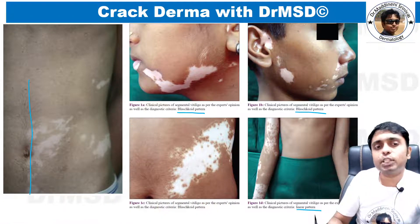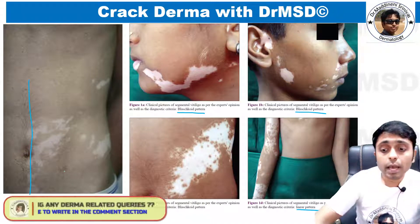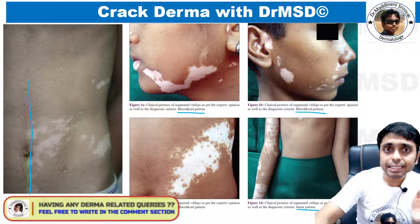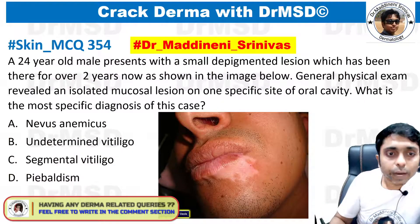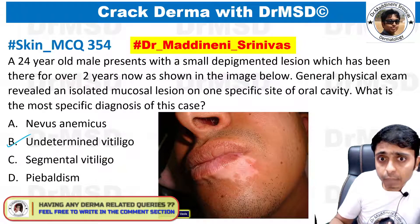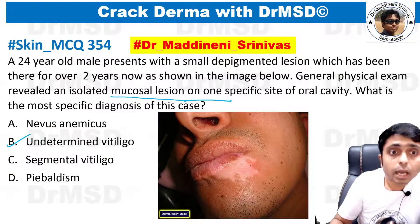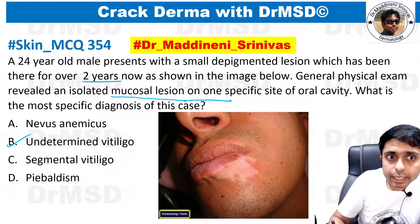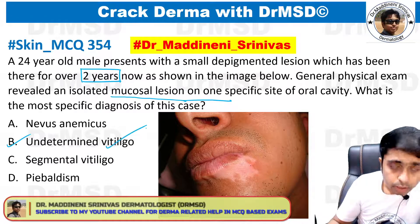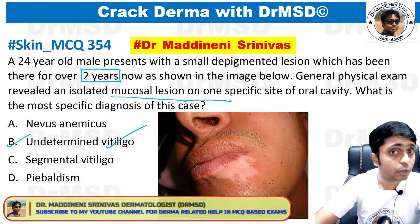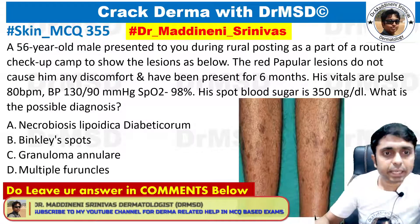This question was asked in a recent INSET exam. With two key clues — the mucosal lesion present at one site, and the duration of more than two years — we can diagnose this as undetermined or unclassified vitiligo. This is very important to remember, as similar questions may be asked in the future.